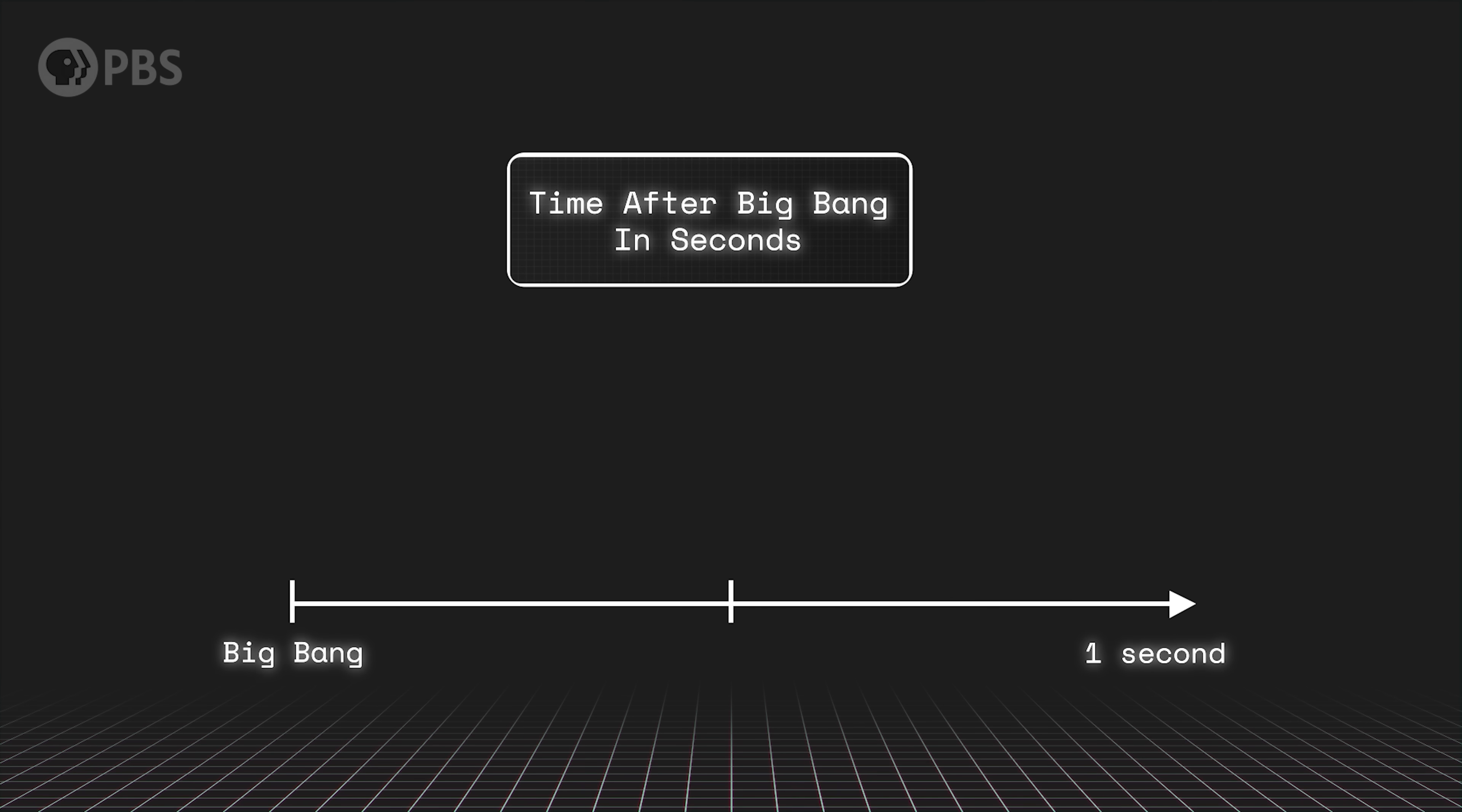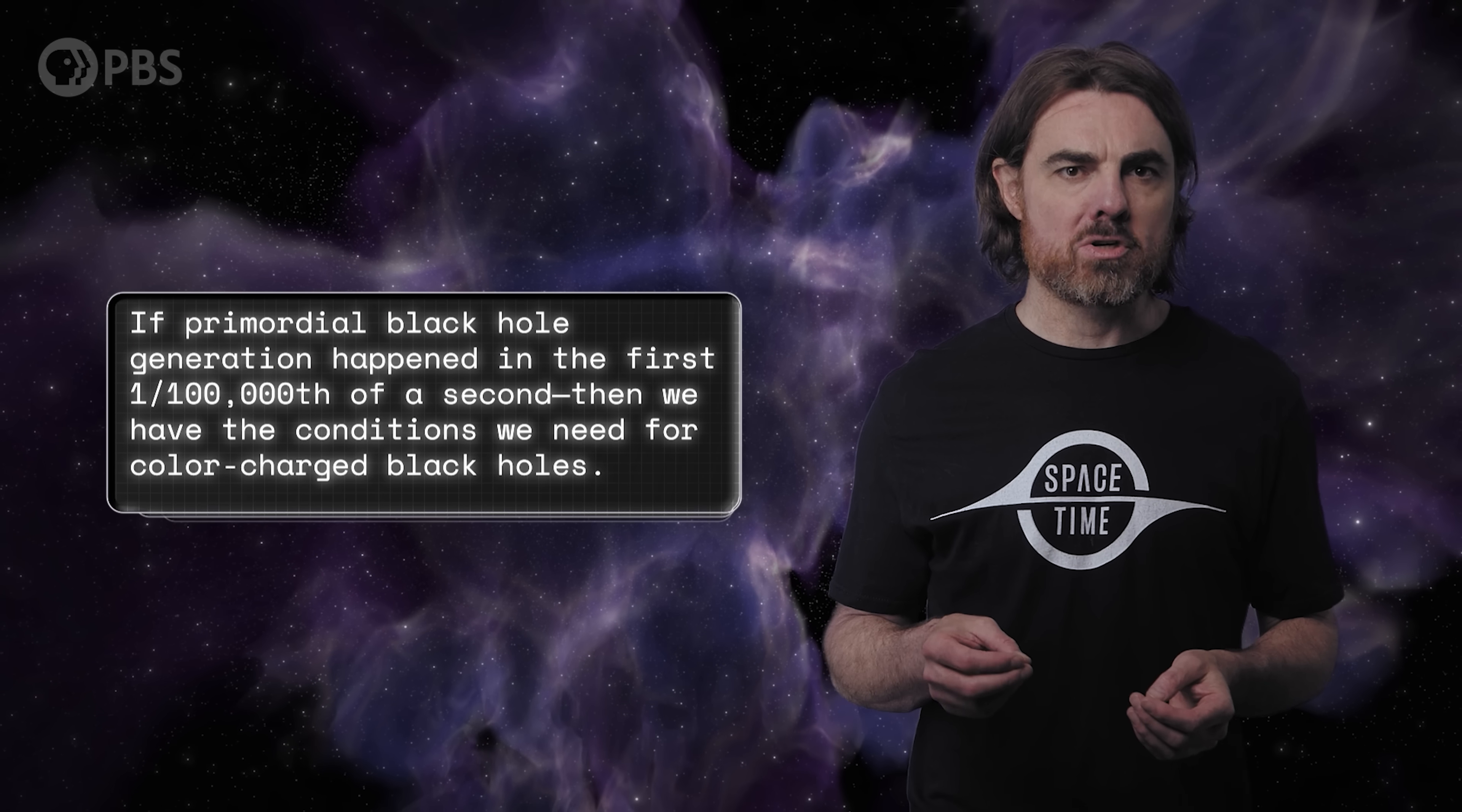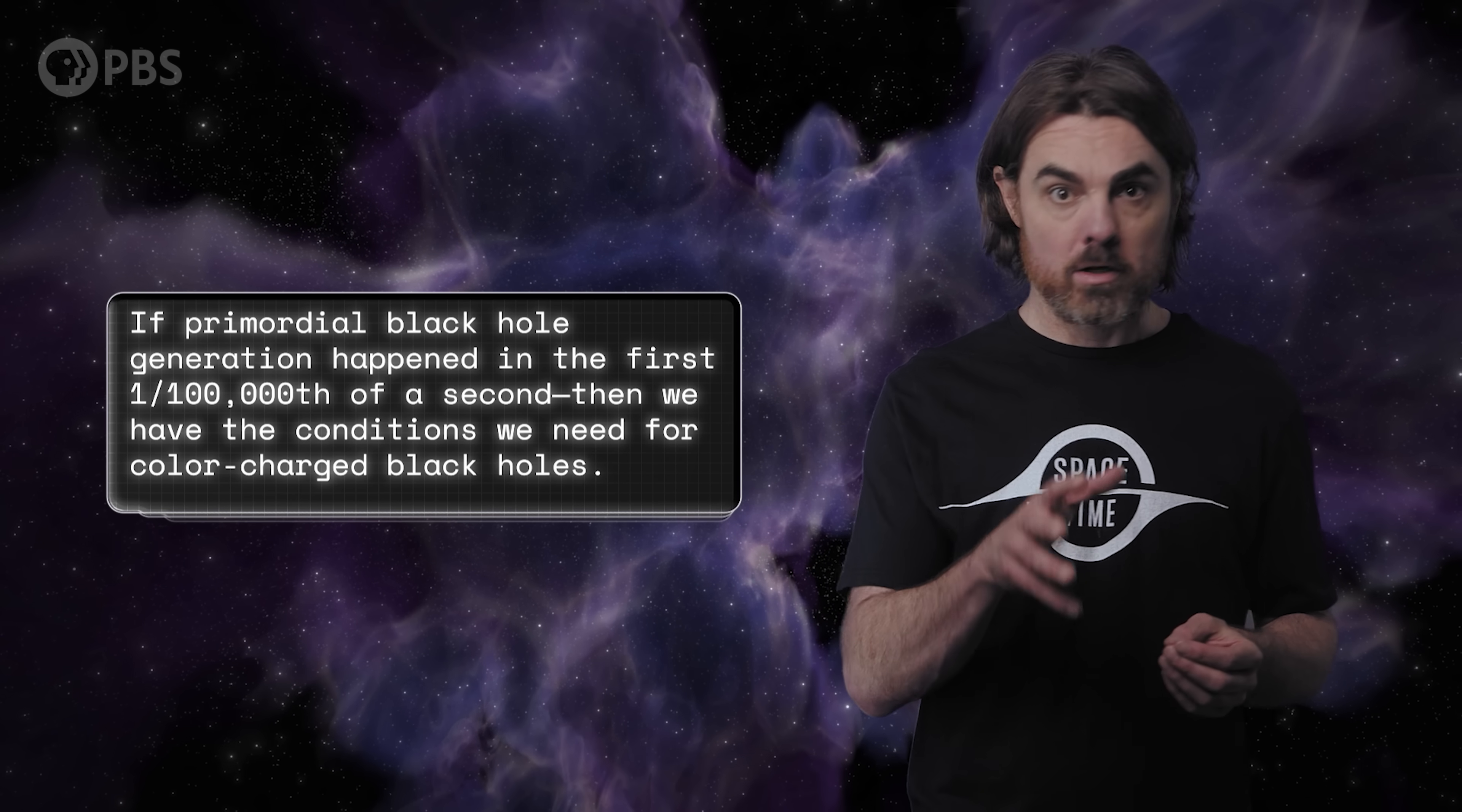If early, then there should be lots of smaller PBHs. If later, there should be fewer but larger ones. So in the extreme conditions of that first second, the universe may have made countless black holes. If that black hole generation happened on the early side, in the first one one-hundred-thousandth of a second, then we have the conditions needed for colorful black holes. Before 10 to the power of minus 5 seconds, the temperature of the universe everywhere was higher than 10 to the power of 13 Kelvin, which is the temperature at which bound states of quarks can't exist. So back then, the entire universe was filled with free quarks and gluons, the quark-gluon plasma that I mentioned.